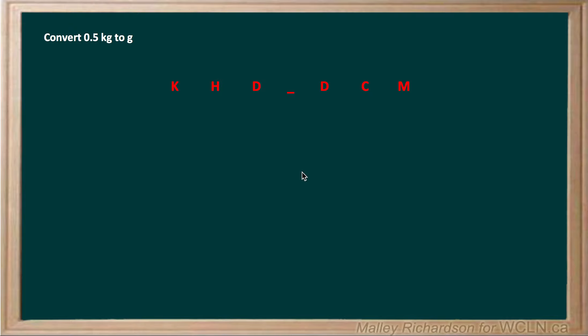In this example we want to convert 0.5 kilograms to grams. So again we want to use our arrangement of letters below K, H, D, D, C, and M.